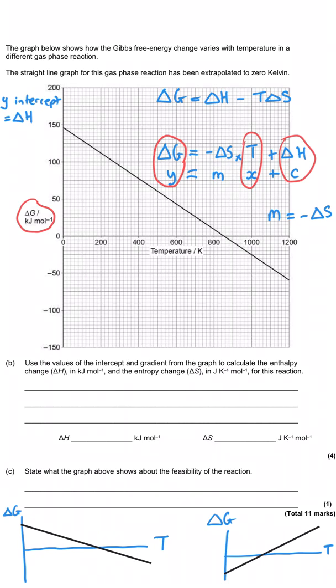And so that's what this question is going to be asking us about here. They've told us that we need to use the values of the intercept and the gradient for the graph to calculate the enthalpy change in kilojoules per mole and the entropy change in joules per kelvin per mole for this particular reaction. So straight up, the Y intercept is the enthalpy change. And so if this is 100 and this is 150, each of these little squares is equal to five and we're one below the 150. So that's just simply 145 kilojoules per mole for our Y intercept. And that's the enthalpy. So no actual calculation necessary here.